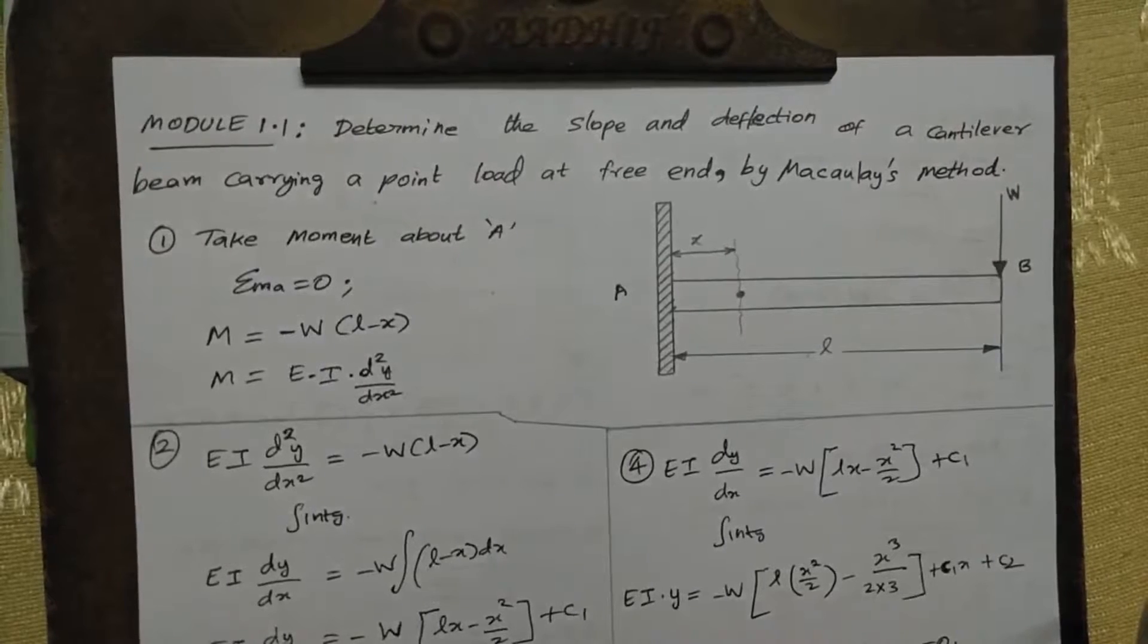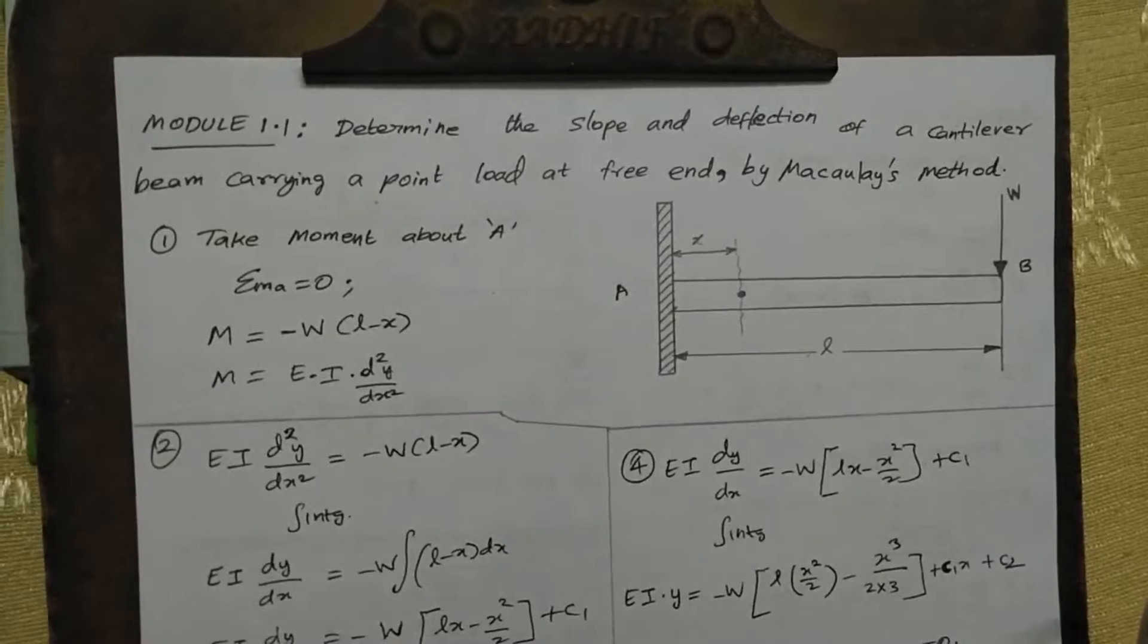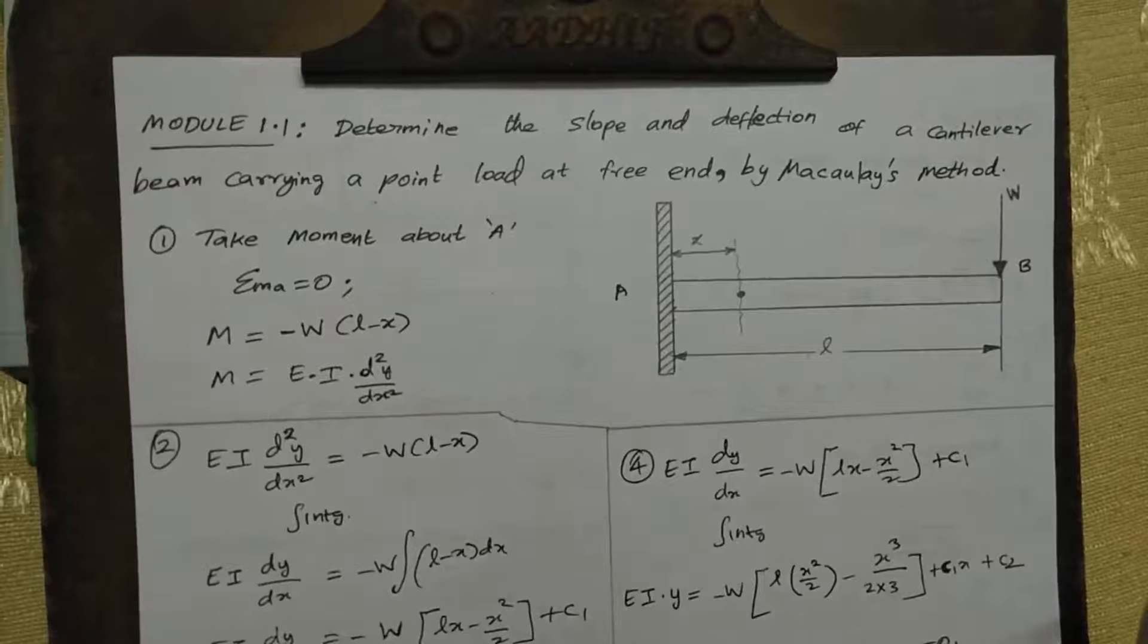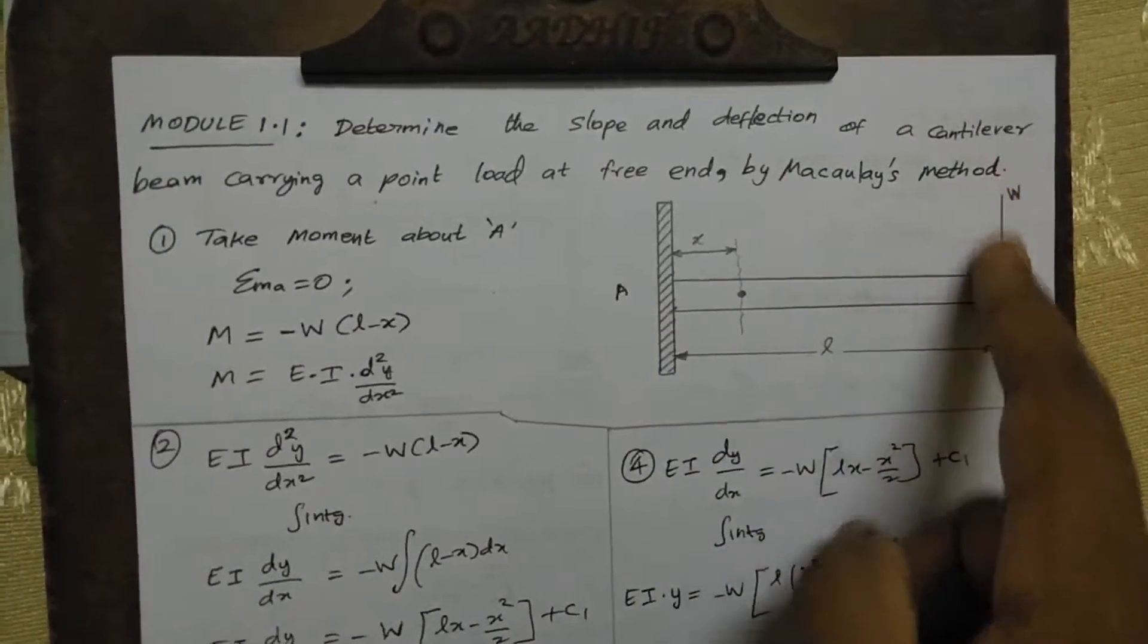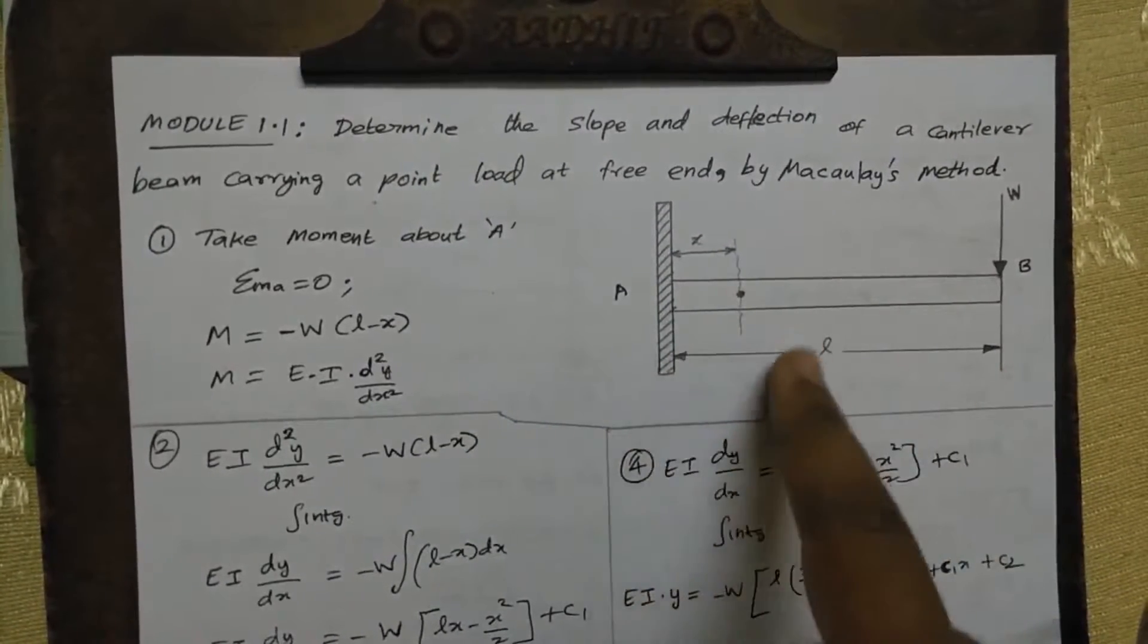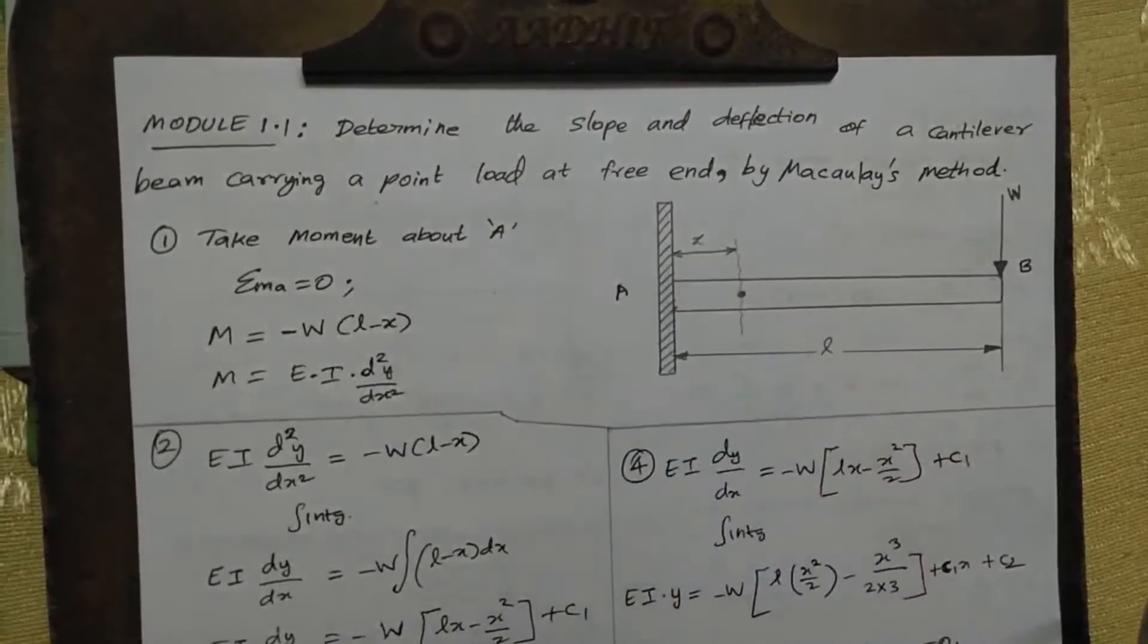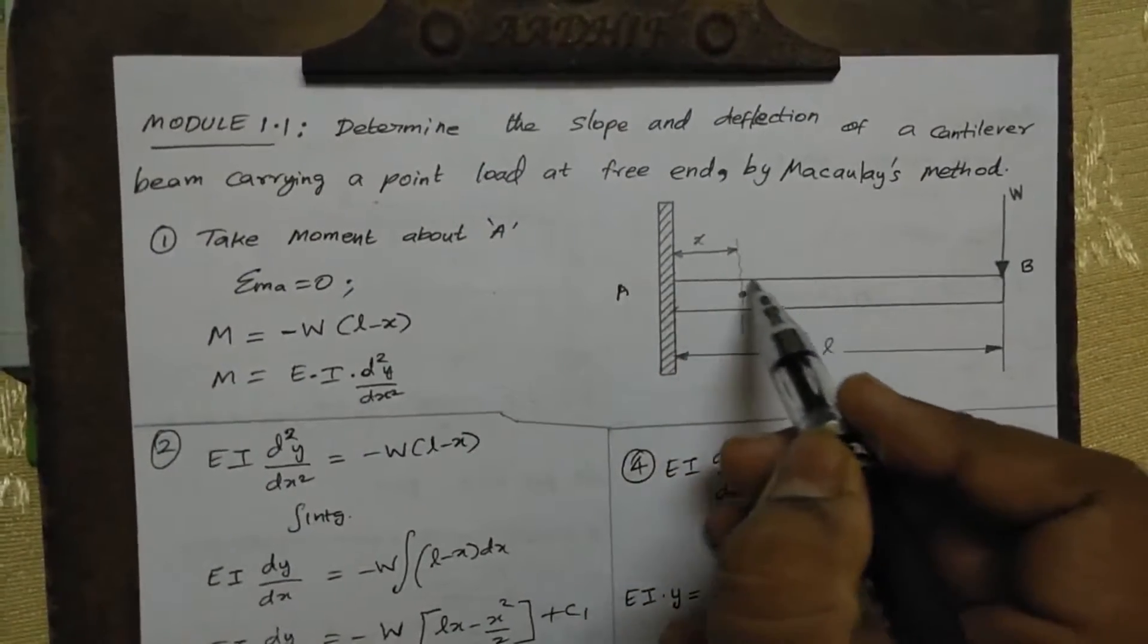This is the Macaulay method. Formulas and definitions. Determine the slope and deflection of a cantilever beam carrying a point load at free end by Macaulay method. So here is the free end, here is the load acting. This is fixed and this is the free end. This is the total length L. Here is x. This load W acts downward. This is the load force. The beam is fixed.